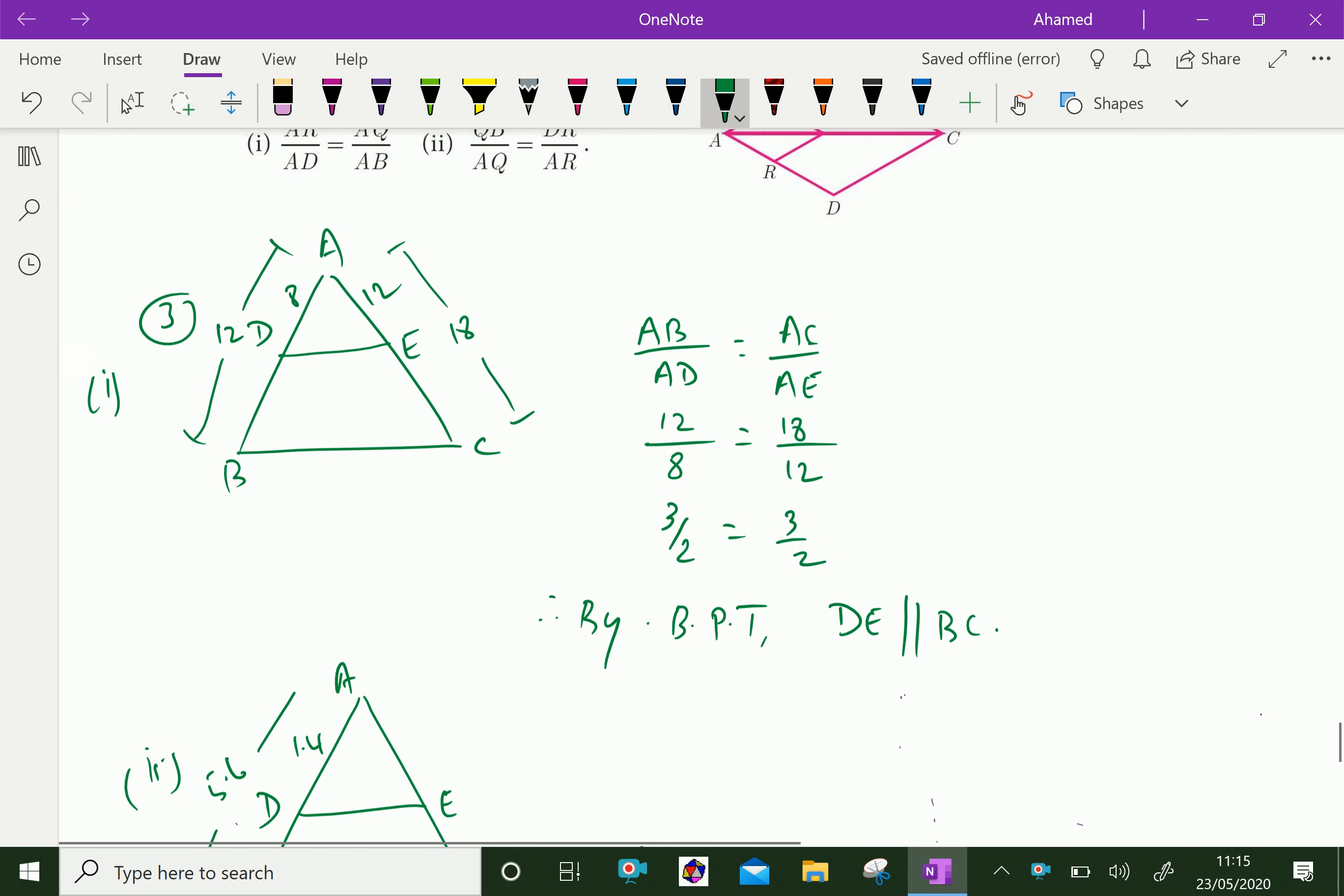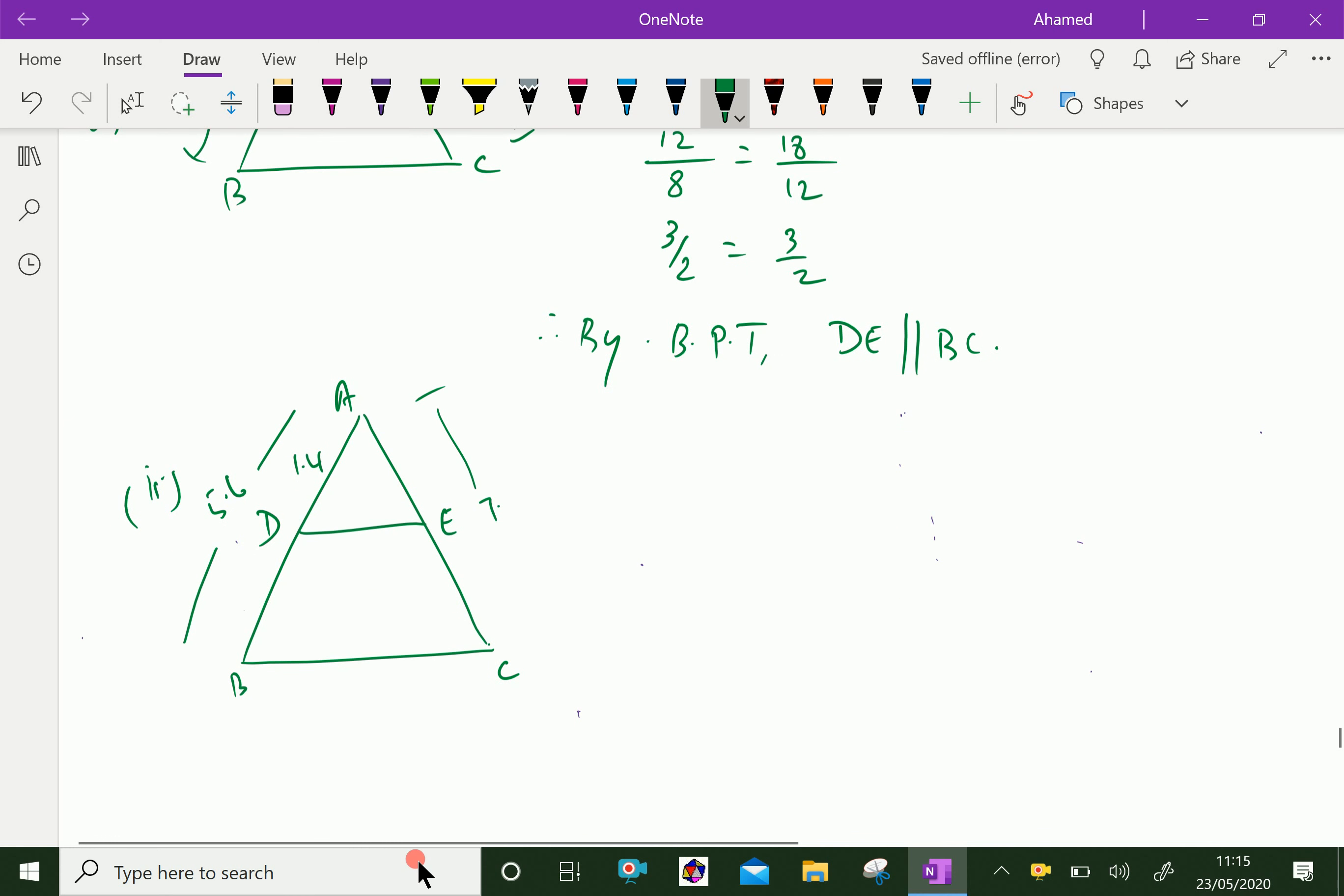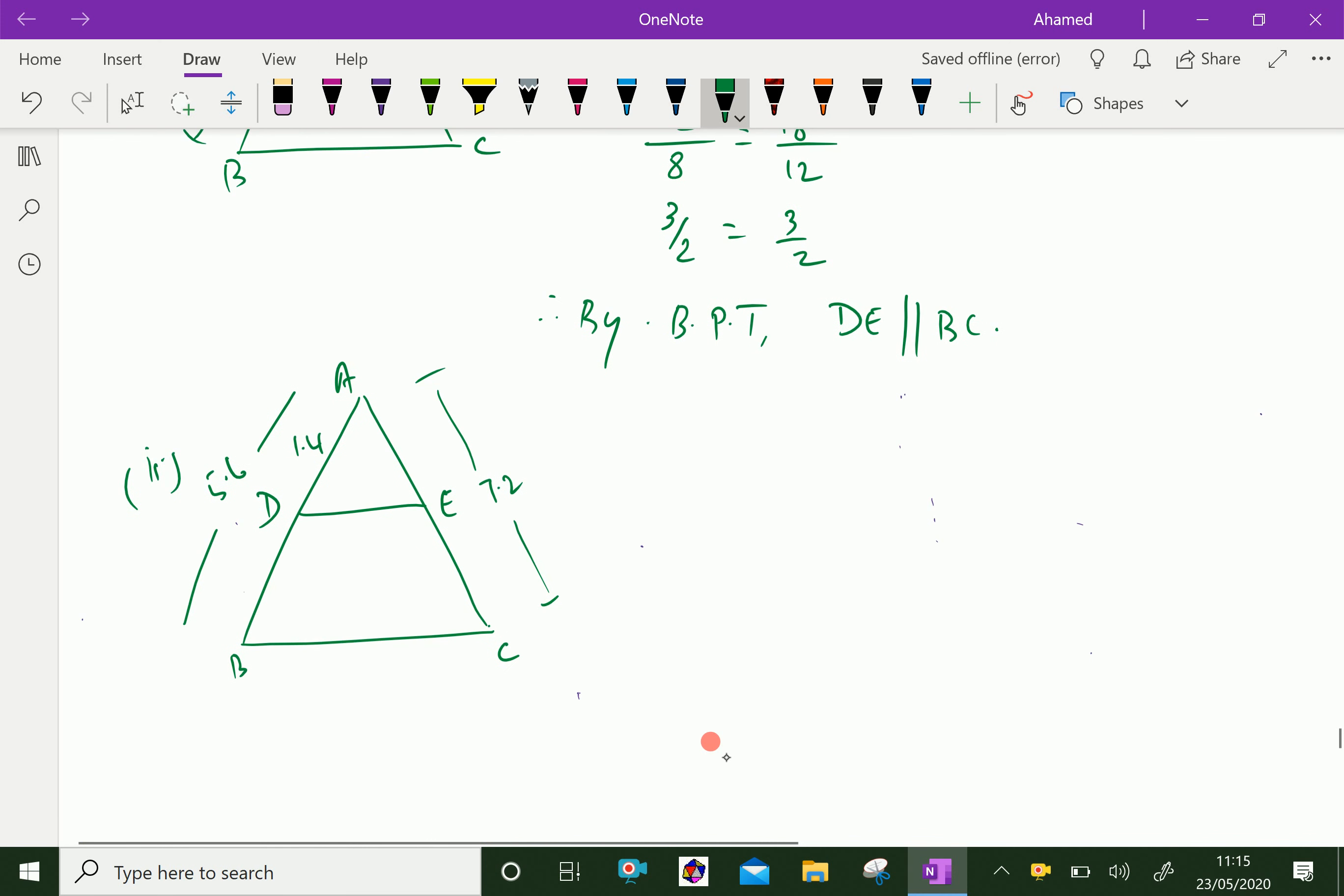Then second case, AC is 7.2. AC is 7.2. AE is 1.8.